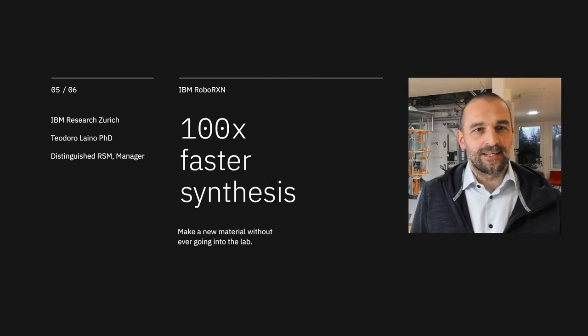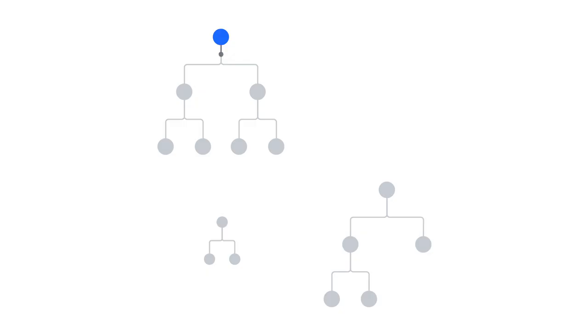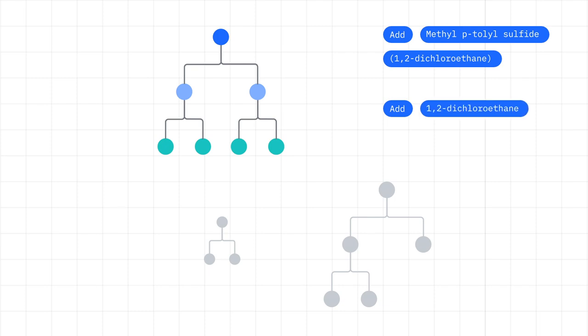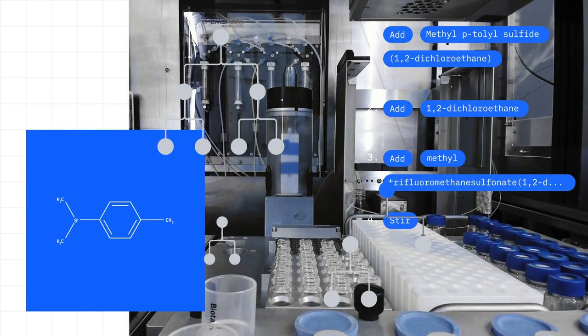The IBM RoboRxN lab is an integration of three technologies: cloud, artificial intelligence systems, and commercial chemical automation hardware.